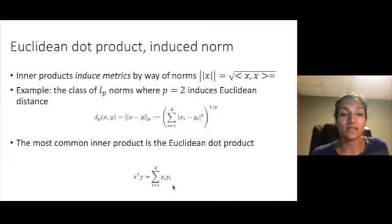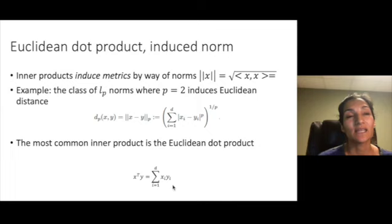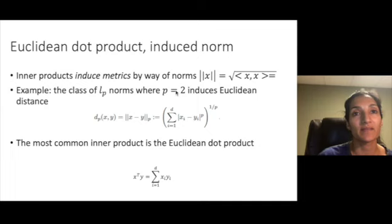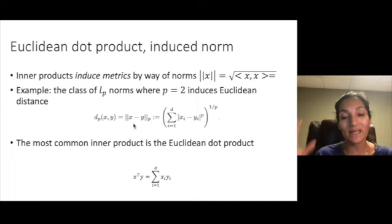Inner products are very interesting because they can actually induce distances by way of something called a norm. A norm is the inner product of a vector with itself and usually the magnitude of that. One example of a norm is an LP norm where the LP norm is usually applied to these difference vectors and we're deriving some notion of the magnitude of this difference vector. And this in turn gives us the difference between or distance between these two vectors.